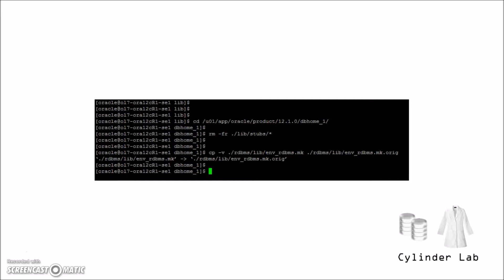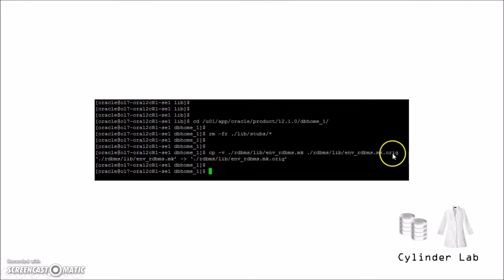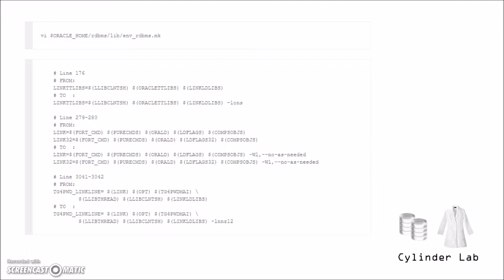This problem is well known and well documented. What you need to do is go to your Oracle Home and empty out this directory. We're going to modify this file, and before you do, it's a good idea to make a backup copy. Then use an editor to go into this file, go down to line 176 and replace that line. Then go down to lines 279 and 280 and replace those two lines. Finally, replace the remaining lines shown here. Save your changes, exit, go back to the Oracle installer, and retry.